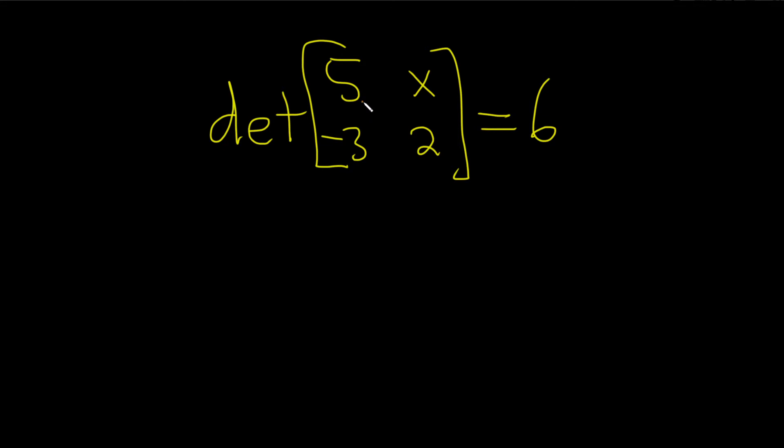So basically, you take this number and you multiply it by this one. So 5 times 2. Then you subtract, and then you do this times this. So it'll be negative 3 times x. And that's equal to 6.